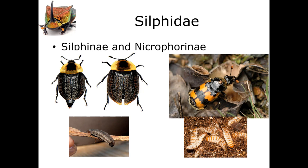So we have two different stages that feed on different substrates: adults are predators, while larvae are saprophages — carrion feeders. Silphid beetles are medium to large in size, and both the larvae and adults are pretty easy to identify due to coloration and body form. We break them up into two major subfamilies: the Silphinae and the Nicrophorinae, based on the body form of the adult and the preferred habitat.